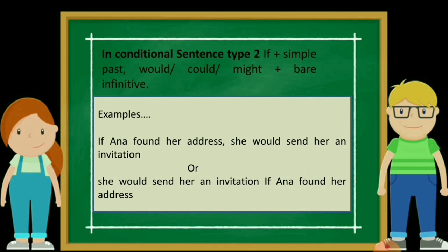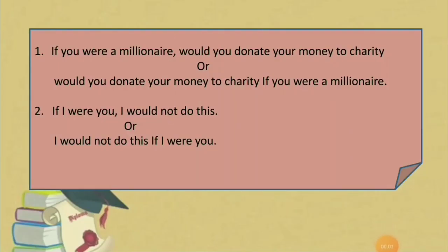Posisinya bisa dibolak-balik. Jika if clause-nya di depan, kamu harus menggunakan koma untuk memisahkan. Tapi jika if clause-nya dipindahkan ke belakang, hilangkan komanya. Jadinya: 'She would send her an invitation if Anna found her address.' Tidak ada kata kerja yang berubah, tidak ada formula yang berubah, hanya posisinya saja. Let's see the second example: 'If you were a millionaire, would you donate your money?' Jika kamu millionaire, kamu mau mendonasikan uangmu? Faktanya, mereka bukan seorang millionaire. Bisa dibalik juga: 'Would you donate your money if you were a millionaire?'